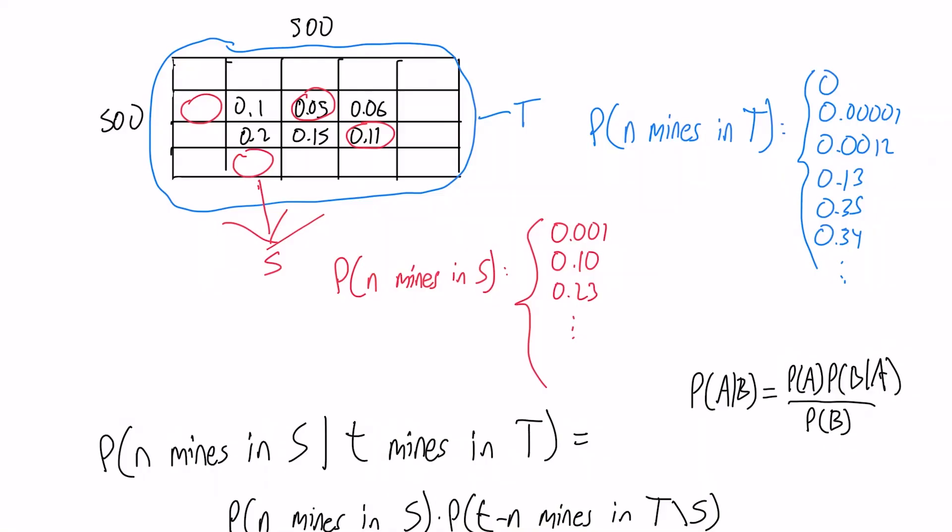The mines have been placed already. We do not know which squares the mines have been placed into, only the probabilities where they were placed. And we do know the total number of mines that were placed after the fact, so that is a post condition on the number of mines.